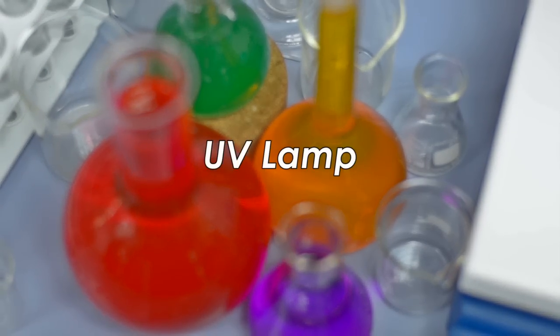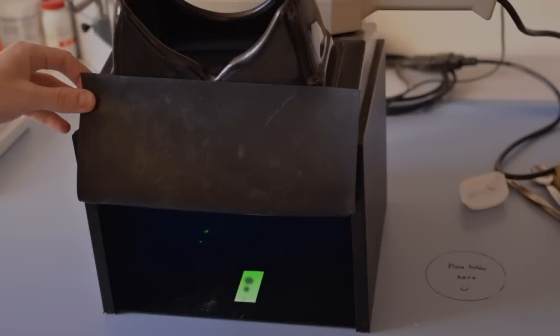For unsaturated compounds, this is a quick and easy technique. Simply put your TLC plate under a UV lamp and observe where any spots are situated.